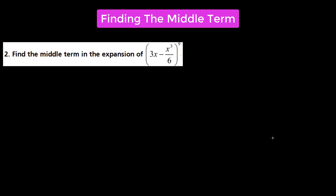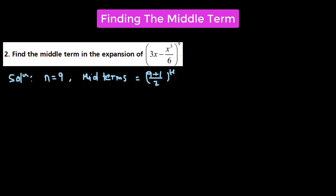Let's go to the next one. Here we also have a binomial expression and we have to find out the middle terms. We see that n equals 9, which is an odd number, so the middle terms will be the (9+1)/2-th term and the (9+1)/2 + 1-th term. So 9+1 is 10, 10/2 is 5. So the fifth term and the sixth term give us the middle terms.